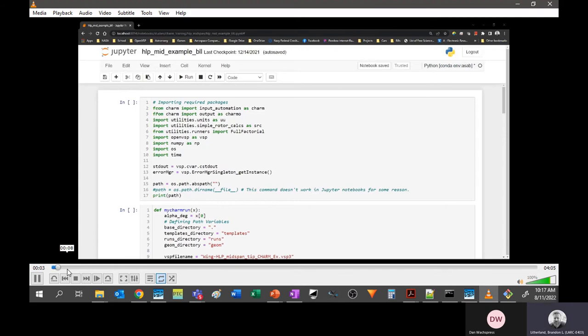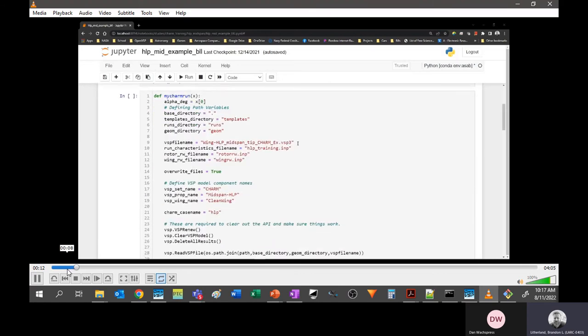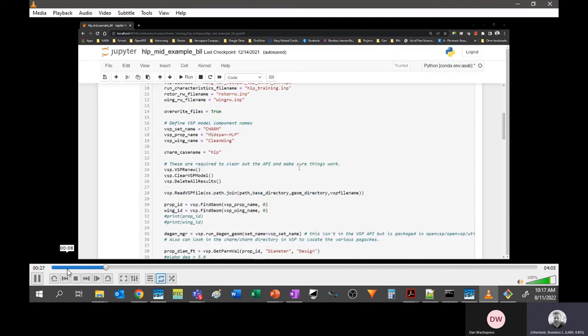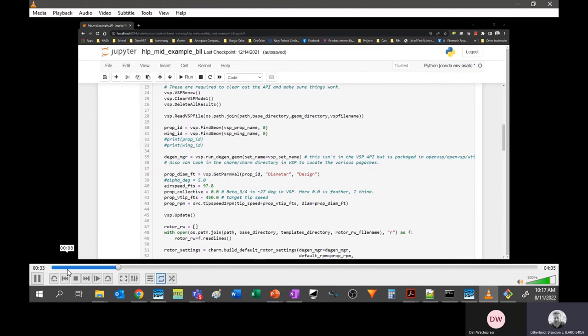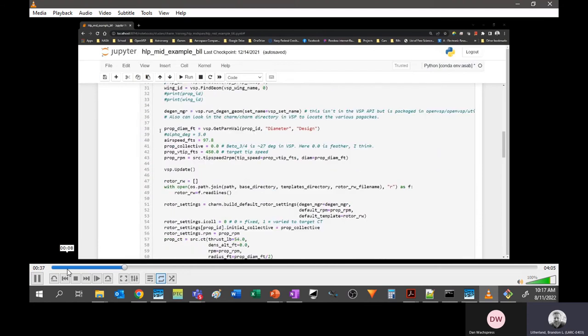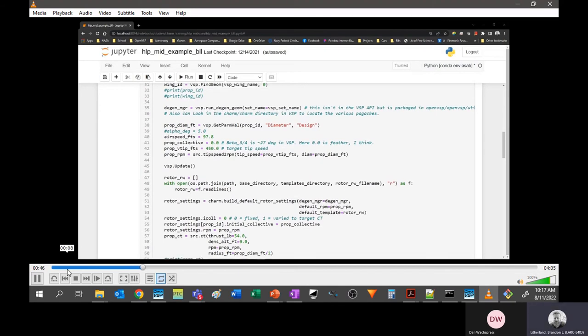As we walk through this, this is an example of that high-lift propeller wing case. At the top, we're just importing the packages: utilities, rotor calculations, things we need, defining paths. This is the function itself that defines and changes things. We've got our templates, we're telling things where the path is, here is my OpenVSP file, and we're starting to set the CHARM set. Look for this thing inside the OpenVSP model. We're changing things: setting these airspeed, the collective, the tip speed, and computing the RPM using simple rotor calculations.